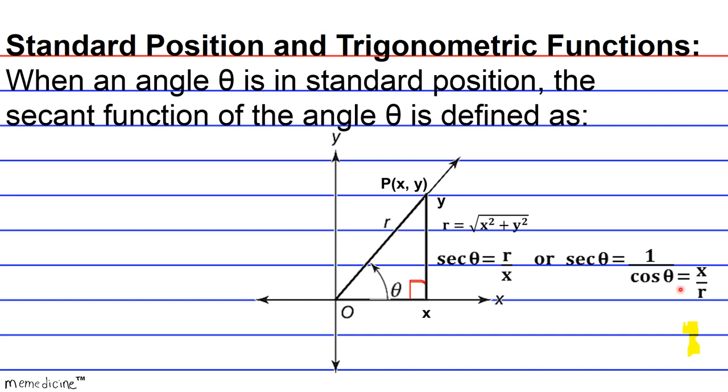And basically when you divide a numerator by a denominator, you multiply the numerator by the reciprocal of the denominator. So let me show you what I'm talking about. So 1 is our numerator and we're basically going to multiply it by the reciprocal or the flip fraction of the cosine of theta. And when we do that, we end up with r over x. Alright, so this is our answer.